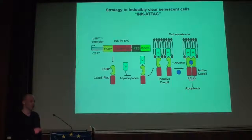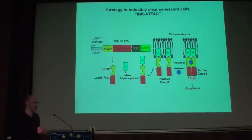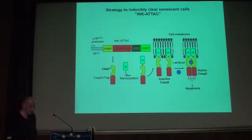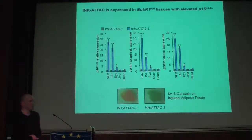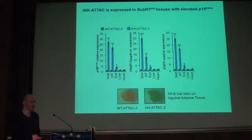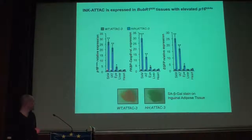We crossed this INK-ATTAC transgene with BubR1 hypomorphic mice. To see results faster — since wild-type animals take two years to develop aging phenotypes — we first tested whether the INK-ATTAC transgene is actually expressed in hypomorphic tissues with elevated P16. Hypomorphic transgenic animals show high P16 expression in skeletal muscle, inguinal adipose tissue, and eye — which is also where we see the phenotypes.